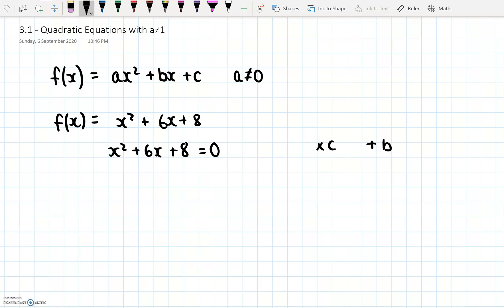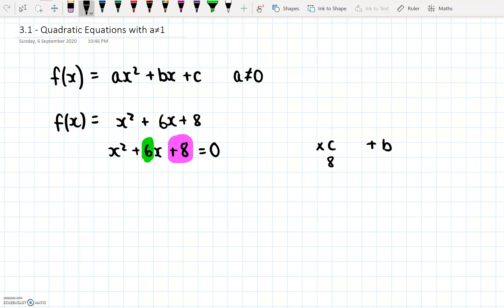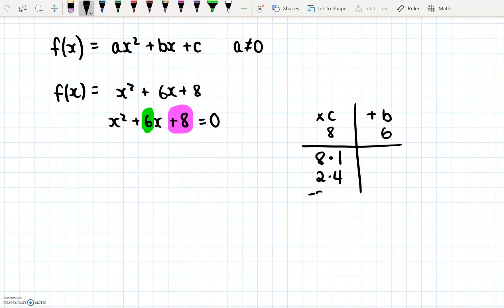Now in this case, c is this number here, which is 8. And b is this number here, the coefficient of x, and that is 6. So we want to look for numbers that multiply to give 8. So we obviously have 8 times 1, we have 2 times 4. We also have the negatives of these, so -8 times -1, -2 times -4. We can then look at what they add together to give. So 8 + 1 is 9, 2 + 4 is 6. -8 + -1 is -9, and -2 + -4 is -6. And we were looking for this 6 here, and that gives us this row here.